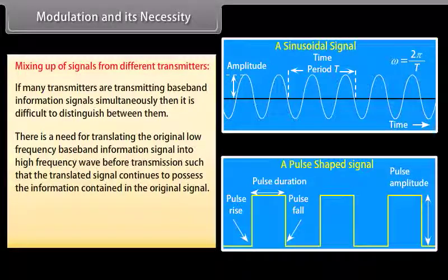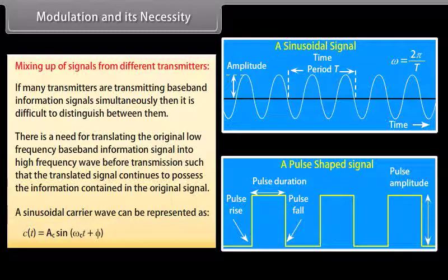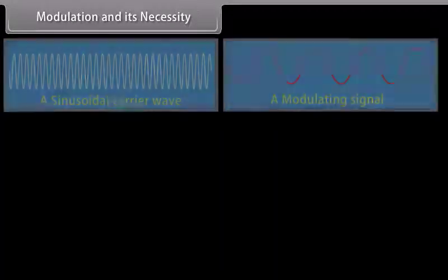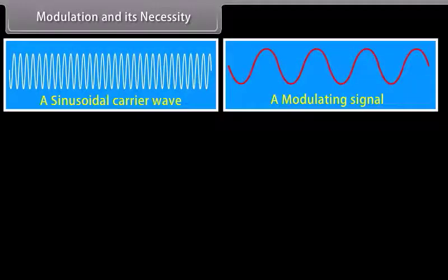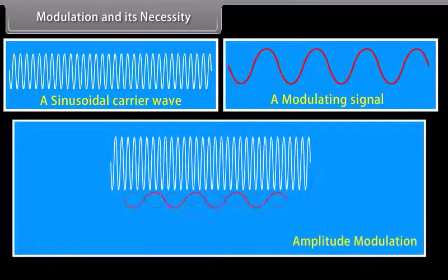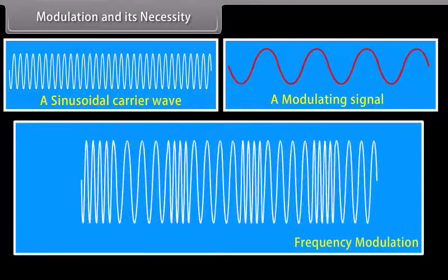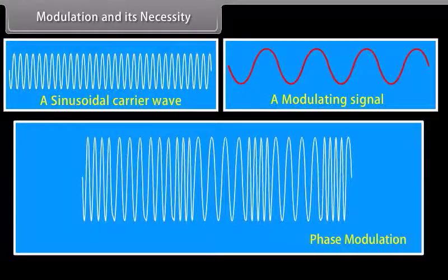A sinusoidal carrier wave can be represented as C(t). There are three types of modulation: amplitude modulation, frequency modulation, and phase modulation.